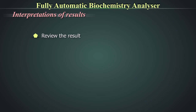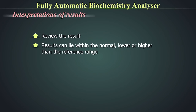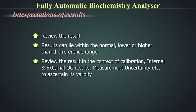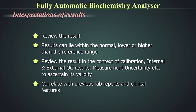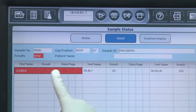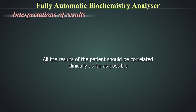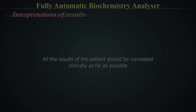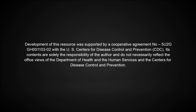Interpretation of results: Review the result, which can lie within the normal reference range, or lower or higher than the reference range. Review the result in the context of calibration, internal and external QC results, measurement uncertainty, etc., to ascertain its validity. Correlate with previous lab reports and clinical features of the patient. If there is any flag, go through the flag list provided by the manufacturer and take corrective action accordingly. All the results of the patient should be correlated as far as possible.